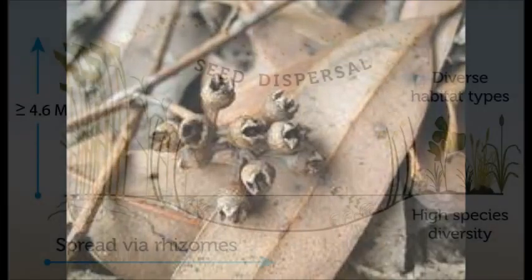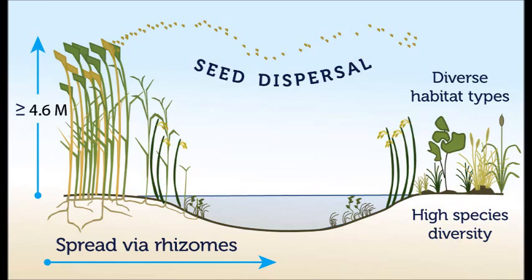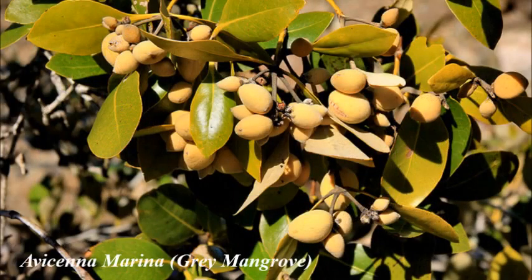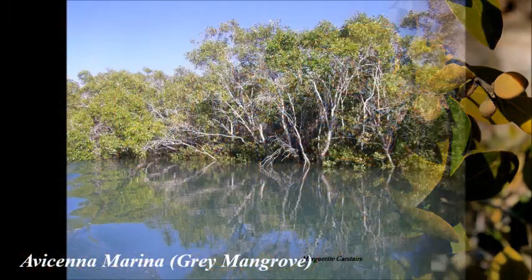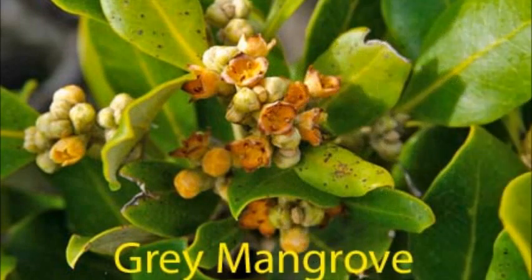Some seeds require water to disperse their seeds small or long distances. This usually occurs with plants that grow near water or in it. Avicennia marina has seeds that are waterproof and buoyant so they can stay afloat and easily be dispersed by water.